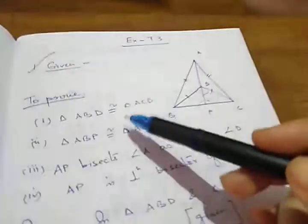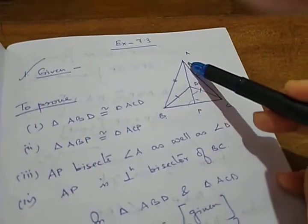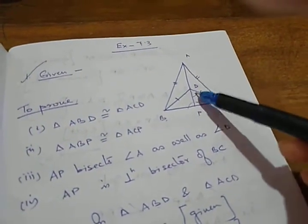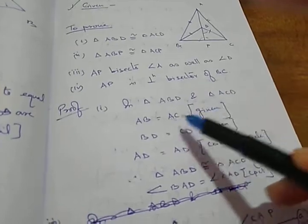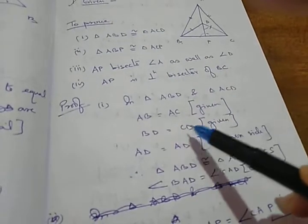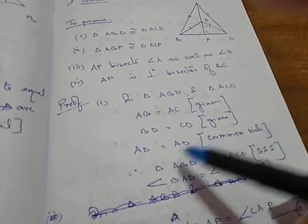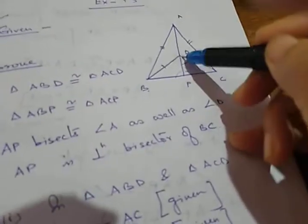First of all we have to prove that triangle ABD and triangle ACD are congruent. In triangle ABD and in triangle ACD: AB equals to AC, which is given. And BD equals to CD, also given. AD is the common side.